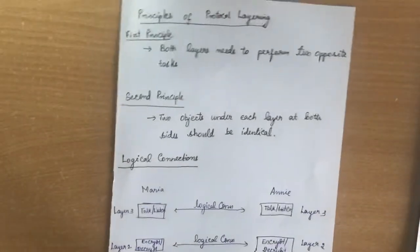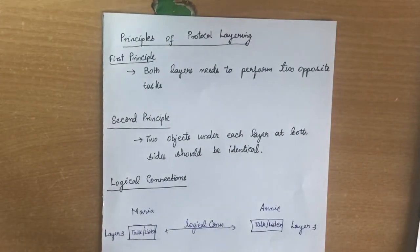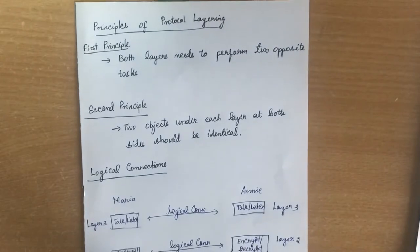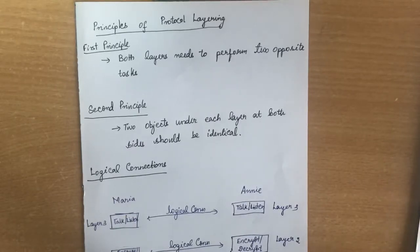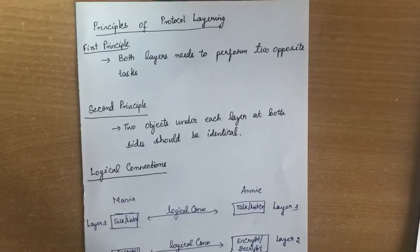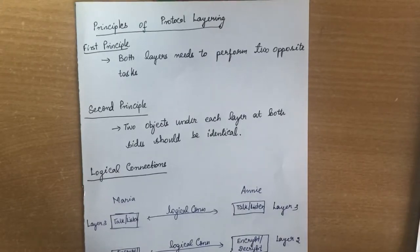Next, we will see the principles of protocol layering. There are two principles. The first principle states that both sides need to perform two opposite tasks. For example, if layer one on Maria's side is performing 'send mail,' then layer one on Annie's side should perform 'receive mail.' Similarly, if layer two on Maria's side is performing encryption, then layer two on Annie's side should perform decryption.